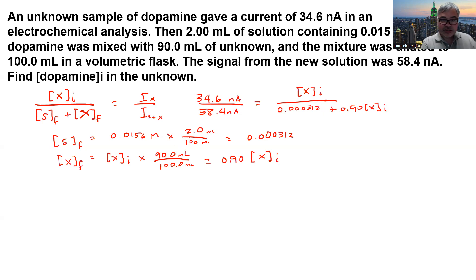So we can write this as 0.000312 plus 0.90 Xi. This equals 0.592. Then we cross multiply 0.592 with these values, giving us around 0.532.